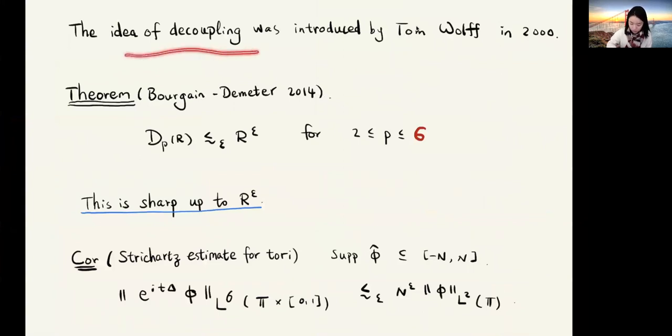The idea of decoupling was introduced by Tom Wolff in the year 2000 in his paper about local smoothing. In 2014, Bourgain and Demeter proved that d_p(r) is bounded by a constant depending only on epsilon times r to the epsilon for any p between two and six. This Bourgain-Demeter decoupling inequality, here we only stated for the parabola, they also proved for the parabola in higher dimensions and also for the cone and other surfaces. This decoupling inequality stated here is sharp up to r to the epsilon.